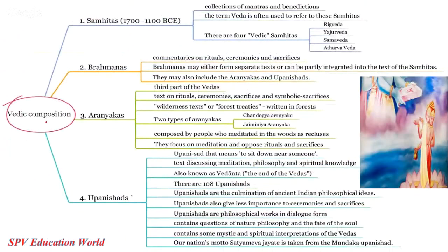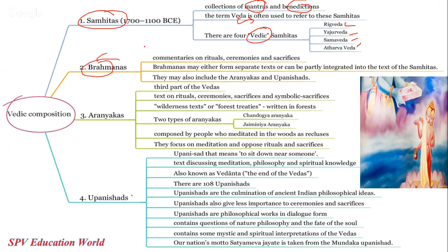Samhitas are collections of mantras and benedictions — the Vedas are often referred to as Samhitas. There are four Vedic Samhitas: Rigveda, Yajurveda, Samaveda, and Atharvaveda. Brahmanas are texts commemorating rituals, ceremonies, and sacrifices — kept secret by Brahmanas to maintain their upper hand in society. Brahmanas may be either separate texts or partly integrated with Samhitas.